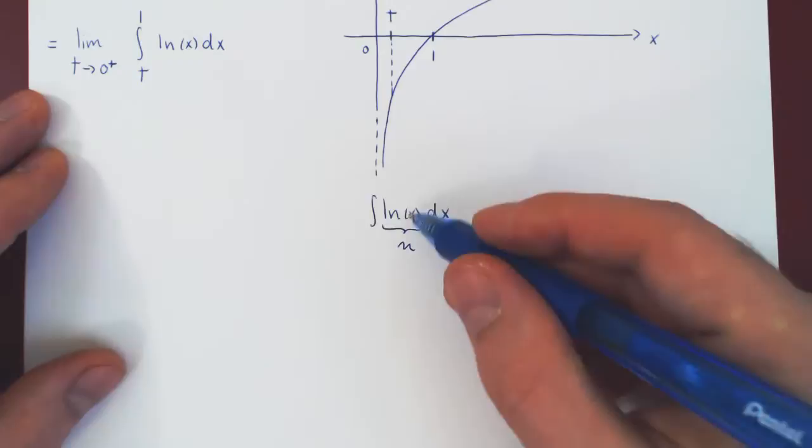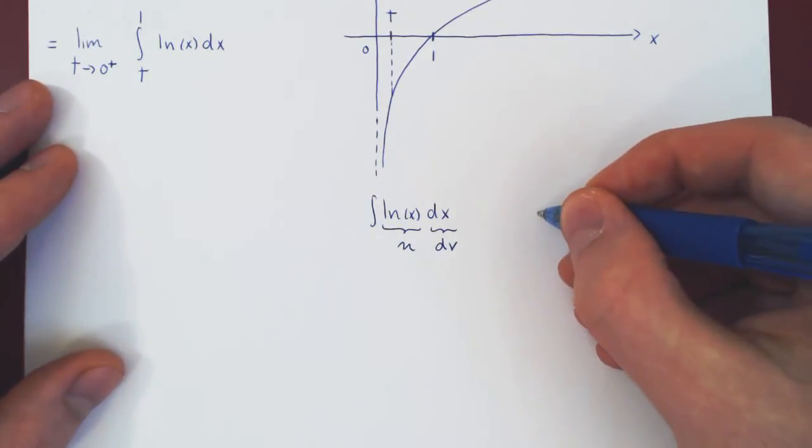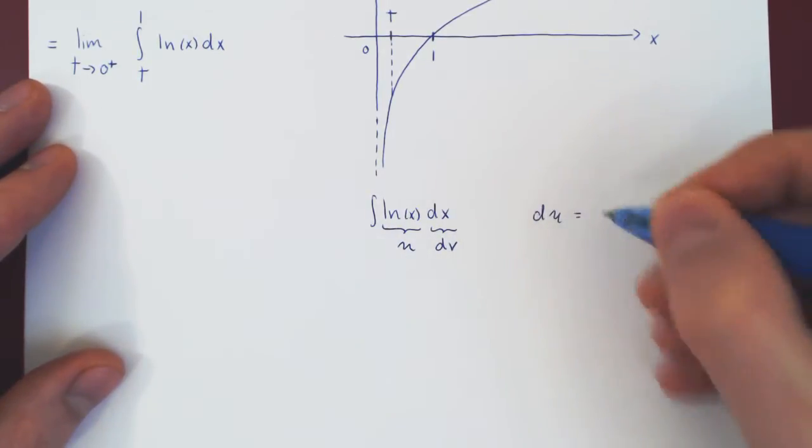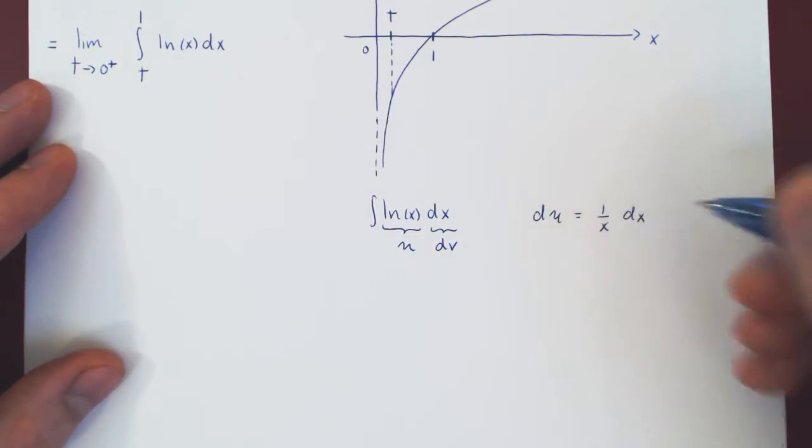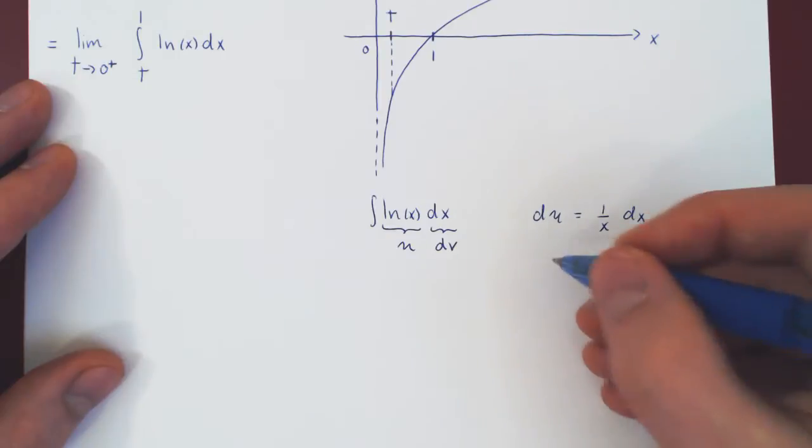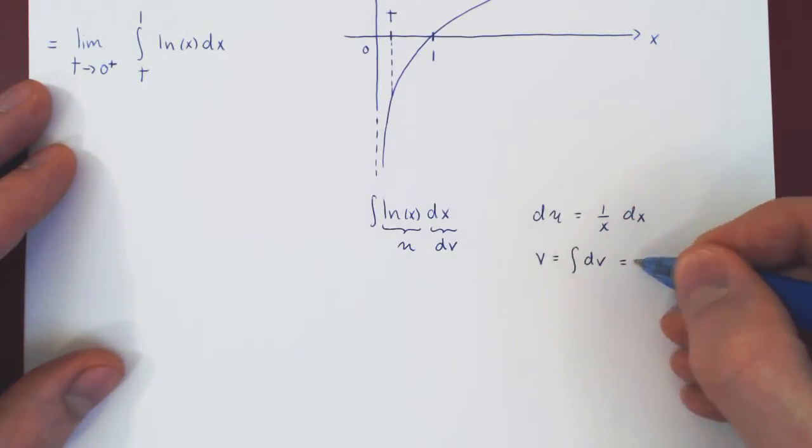Of course, now we need to find our du. Well, the differential of u is a differential of ln of x, which is of course 1 over x dx. And we need our v. And to obtain v from dv, we integrate dv. Well, that's just the integral of dx, which is simply x.